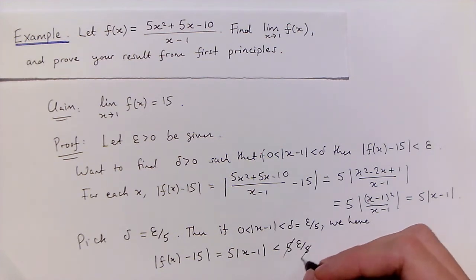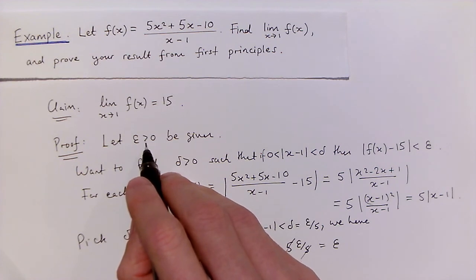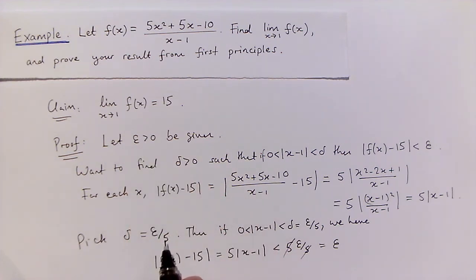The 5s cancel, so altogether, this distance is less than epsilon. So to summarize, we were given some positive epsilon up here. We've managed to find the positive delta, just take delta to be epsilon over 5, such that whenever x is within a distance delta of 1, f(x) is forced to be within a distance epsilon of 15. So we're done.